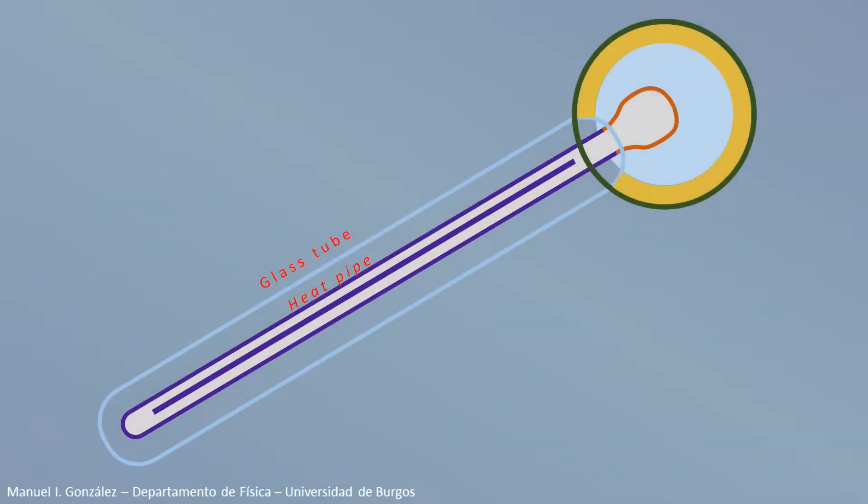Let's see now how the heat pipe works. Its interior is also evacuated, and it only contains a small amount of a volatile fluid, such as an alcohol.